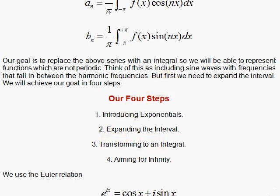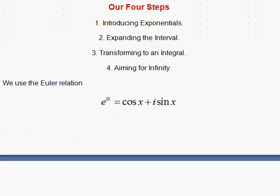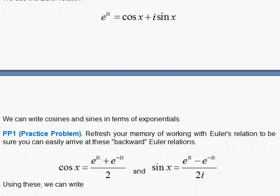We start with the Euler relation. Here's a nice exercise to review to get the backward Euler relations, the cosine and the sine in terms of the exponentials. You simply write another Euler formula with e to the minus ix, and you have cosine x minus i sine of x. If you add them together, you get 2 cosine, divide, and so on. It's nice to review that and remember these two.